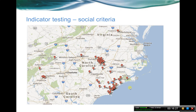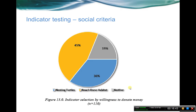They did work in the Research Triangle and also down near the coast. One of the particularly applicable measures from here — based on 110 responses — is indicator selection by willingness to donate money. They asked the question: would you rather donate money to support nesting sea turtles, beach-dune habitat, or neither? It's not really a clear-cut case about which of these indicators — the habitat metrics or the species metrics — resonates more with folks. The gray category also represents people who said they don't want to give money to either.